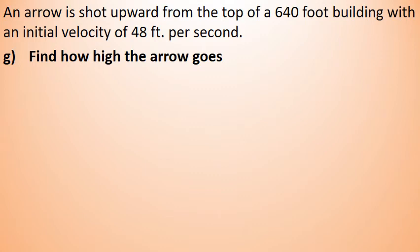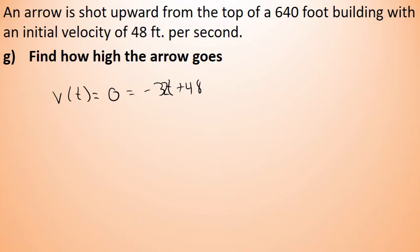To determine how high the arrow goes, we recognize that when initially shot upward it travels with a positive velocity, reaches its highest point, and then begins to fall with a negative velocity. At the highest point, for just an instant, the velocity is zero. So we set the velocity function equal to zero: negative 32t plus 48 equals zero, and solve for t. That value of t gives the time after launch when the arrow has reached its highest point. We then plug that time into the position function to find the maximum height.